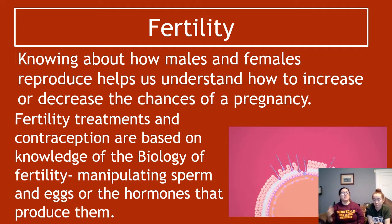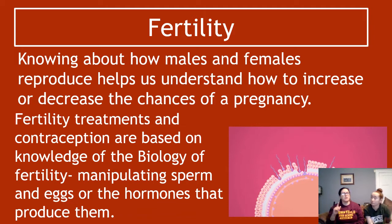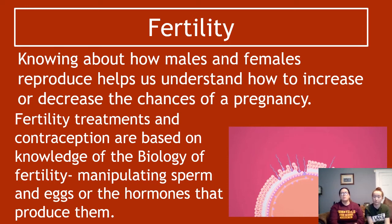This means we can manipulate sperm and eggs to either prevent them from being produced, prevent them from meeting each other, or prevent a zygote from implanting. But we can also help increase the chances of them meeting, or help increase the numbers produced, because of our knowledge of fertility. Both fertility treatment and contraception rely on understanding how sperm and ova are created and how babies are made.